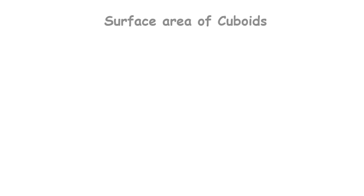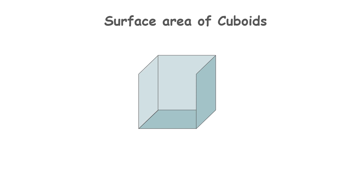In this video, I'm going to show you how to calculate the surface area of cuboids. A cuboid is a 3-dimensional cube-like shape with a total of 6 faces. And surface area is the total area of each of those faces.